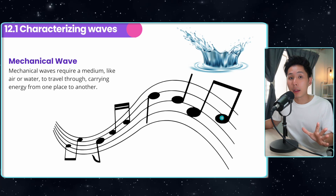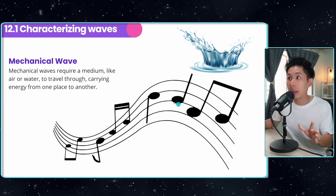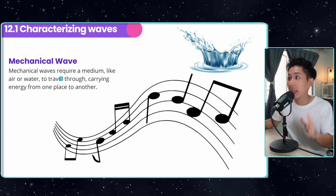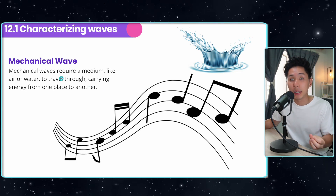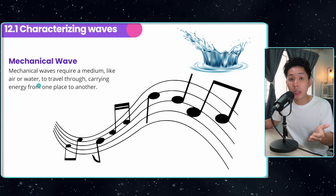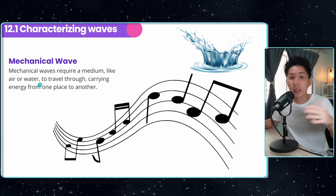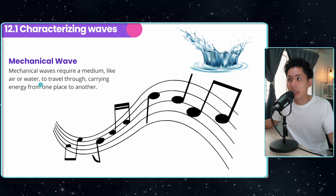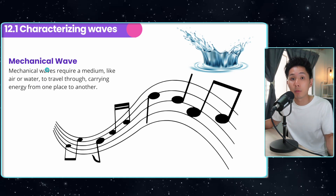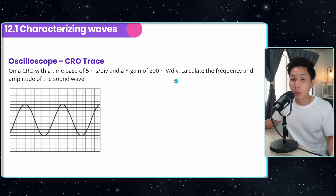Some of the waves we've explored are mechanical waves — they require a medium to be transferred. For example, sound waves and water waves all require a medium. Unlike light: light is not a mechanical wave because it doesn't require a medium to travel through.